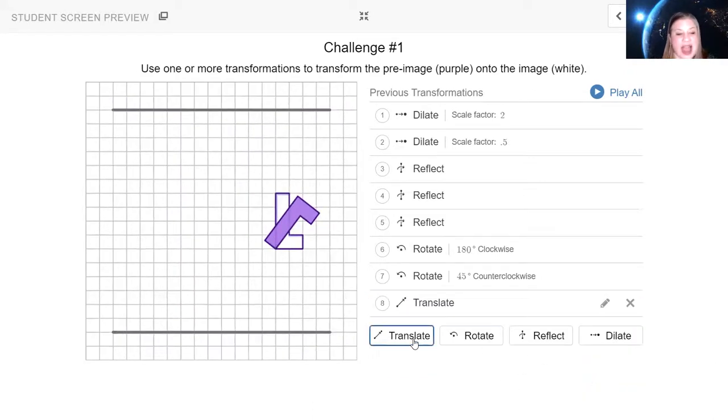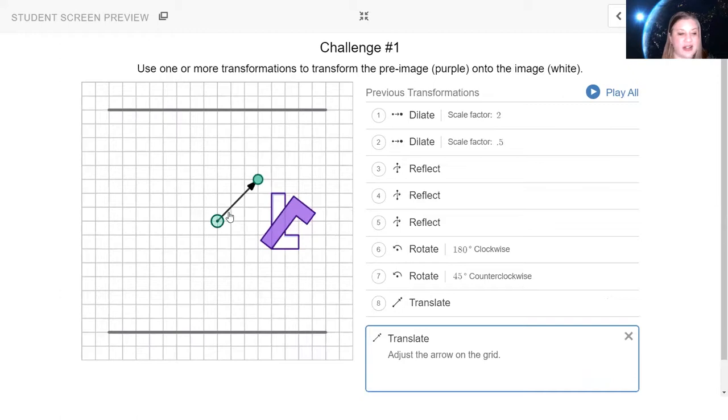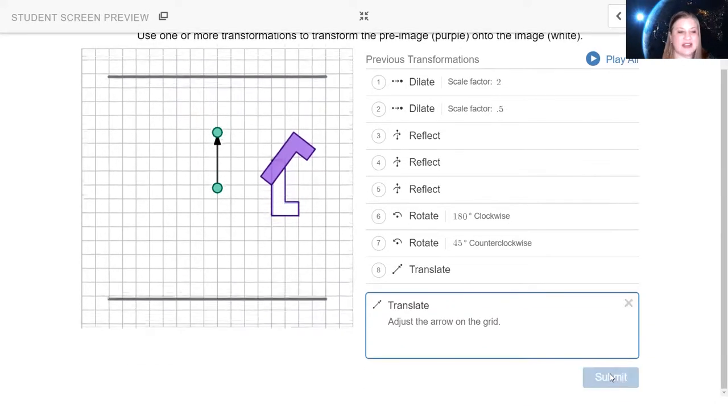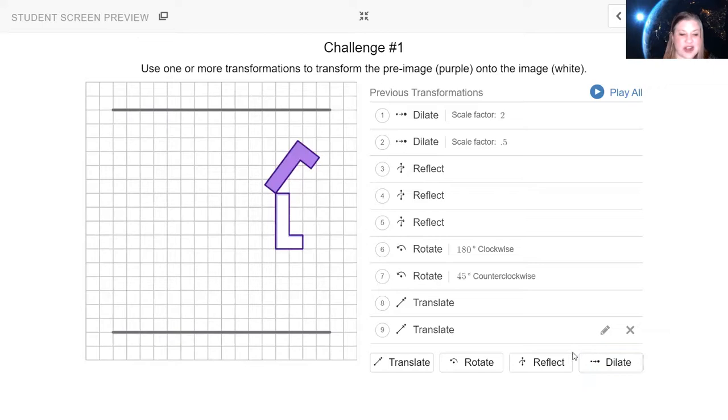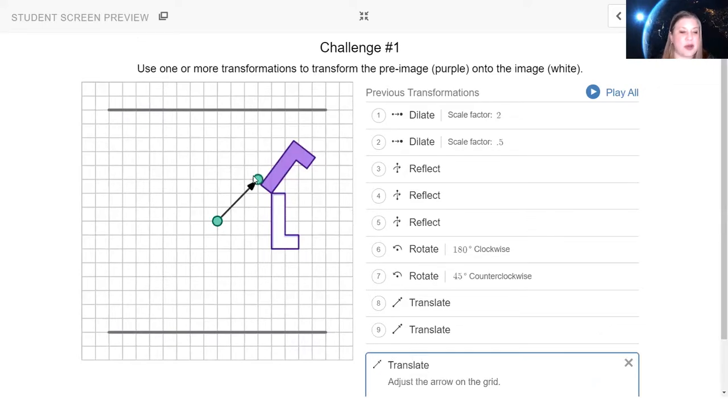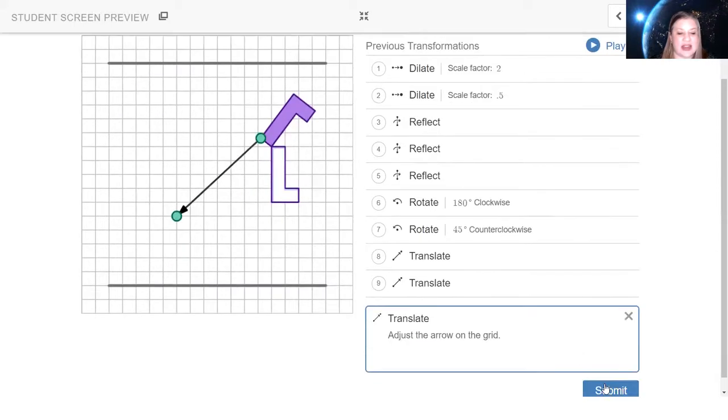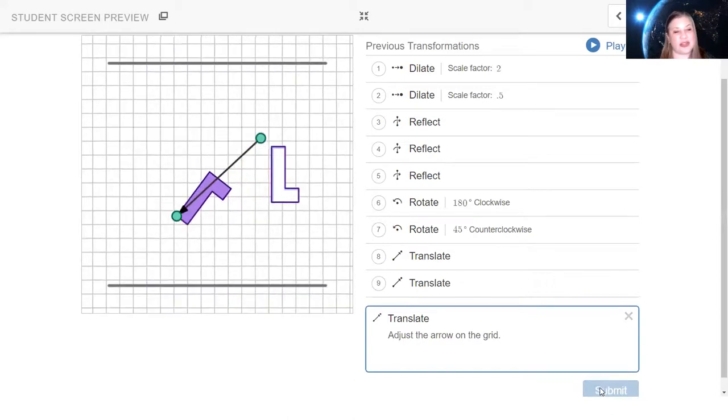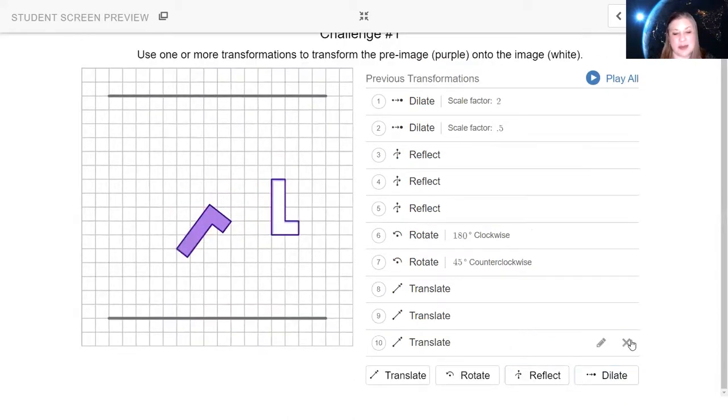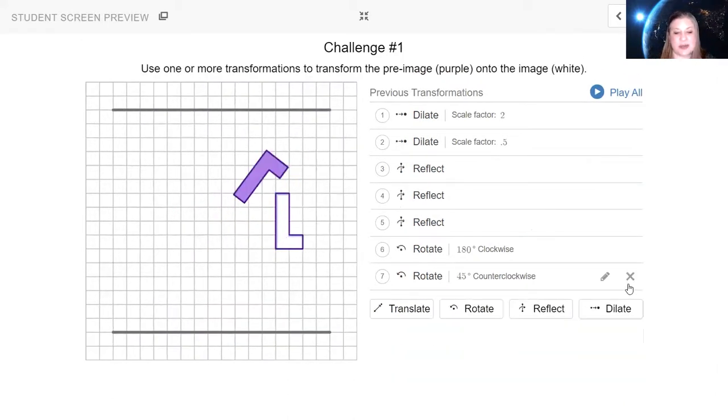Now again you don't have to have it on the L. If I use this and I put it like this it means this whole L is going to go one, two, three, four spaces up just like that. So translate the big thing to remember is you always put the point where you want to start and then you put the ending point where you'd like that point to end and then it will slide the whole thing.